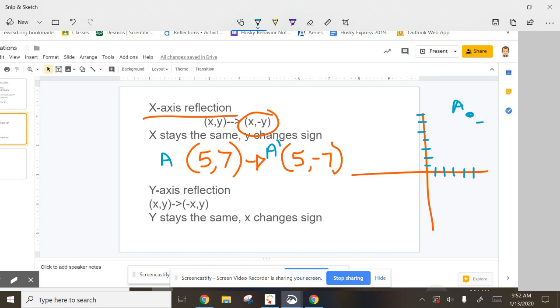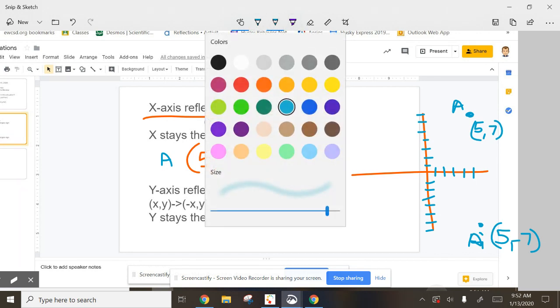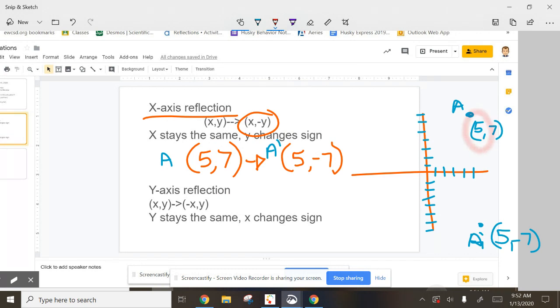This is where A would be: (5,7). Then we're going to reflect this. If we go over 5, down 7, that's A prime. A prime is now still over 5, but it's now down 7. The easiest way to look at it is the X never changes when it's an X reflection. X reflection—the X doesn't change.